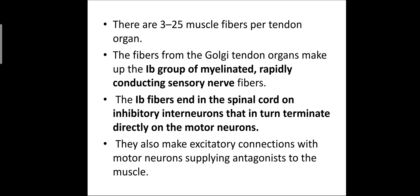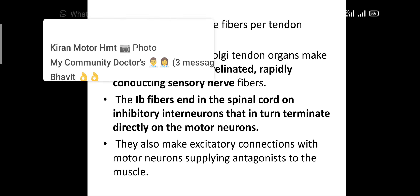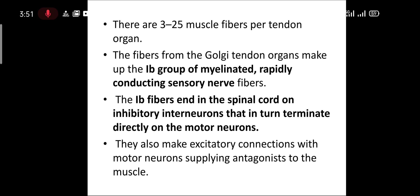The structure of Golgi tendon organs: there are 3 to 25 muscle fibers per tendon organ. So 1 tendon mein 3 to 25 muscle fiber hain. The fibers from Golgi tendon organs make up the 1B group of myelinated, rapidly conducting sensory nerve fibers. The 1B fibers end in the spinal cord on inhibitory interneurons that in turn terminate directly on the motor neurons.